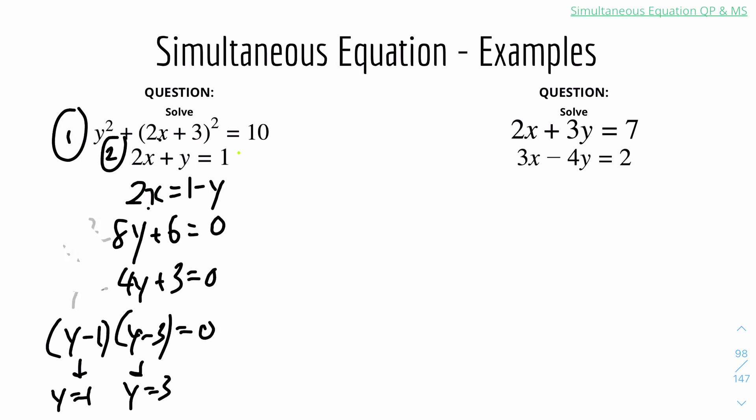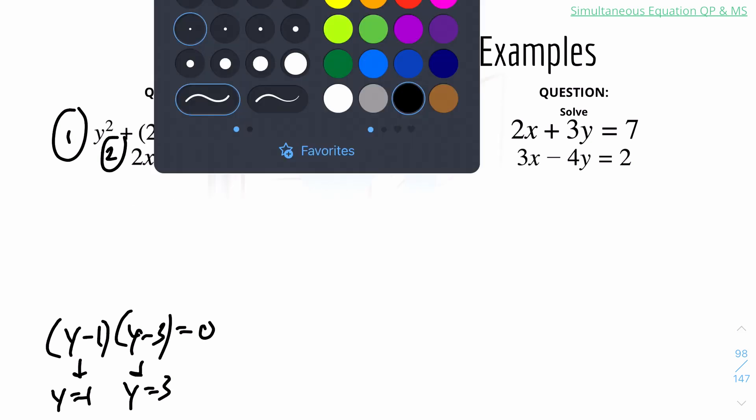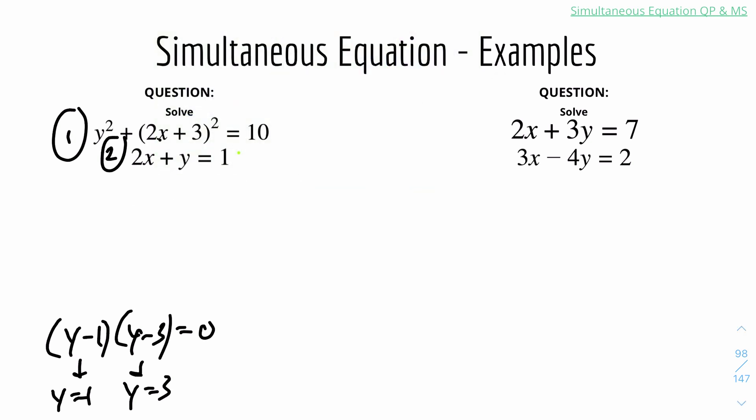Once you have two values for y, you have to find the values for x that corresponds to that y. So x equals something, y equals 1, and x equals something, y equals 3. Let's put it in the second equation because it's much easier. So 2x plus 1 equals 1. Minus 1, it will get us 2x equals 0, so x equals 0.